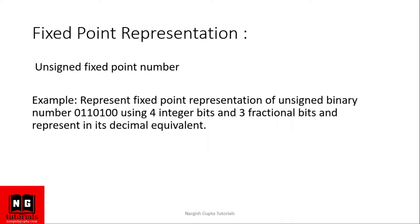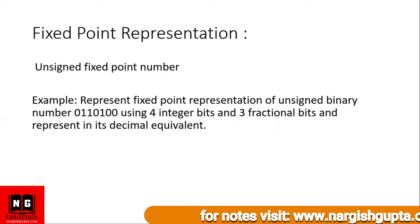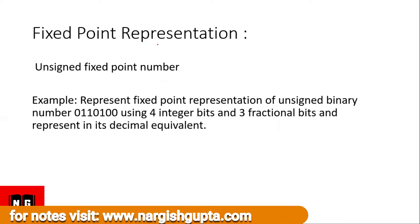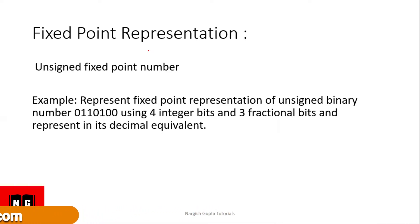In fixed point representation, as already explained, the digits after the decimal will be fixed. There are two types: unsigned fixed point numbers and signed fixed point numbers. In the unsigned type we handle only positive numbers, while in signed fixed point numbers we handle negative values also.